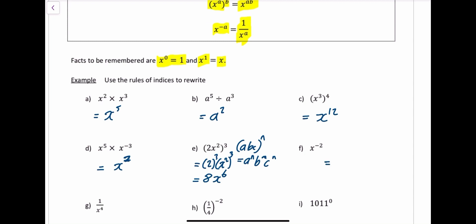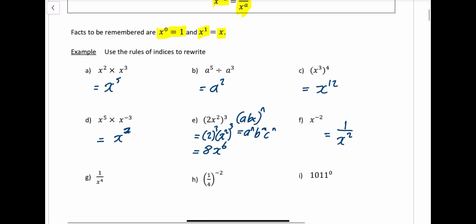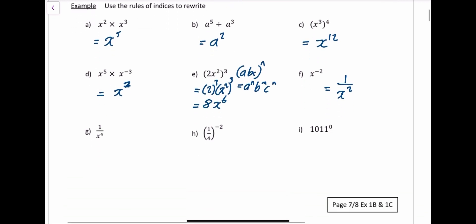This last one we could write as 1 over x squared — and that's the one people find tricky with negative powers. So this one, again, it's already in the form 1 over x to the power of 4, so you write that as x to the minus 4.